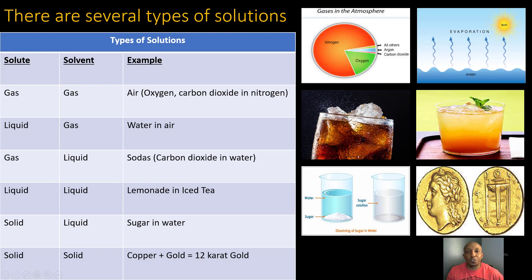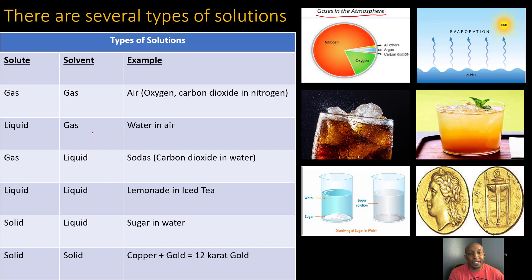As a matter of fact, there are several types of solutions. We'll start with our gas-to-gas solution — basically air, which is a combination of oxygen, carbon dioxide, and nitrogen. Most of our atmosphere is composed of nitrogen gas, with oxygen, carbon dioxide, and small amounts of argon. Our next solution is liquid and gas — that's water and air. The sun heats up the water and causes it to evaporate into the atmosphere, giving us our liquid-gas solution. Then we have our gas-liquid solution, which is basically sodas — carbon dioxide dissolved in water.